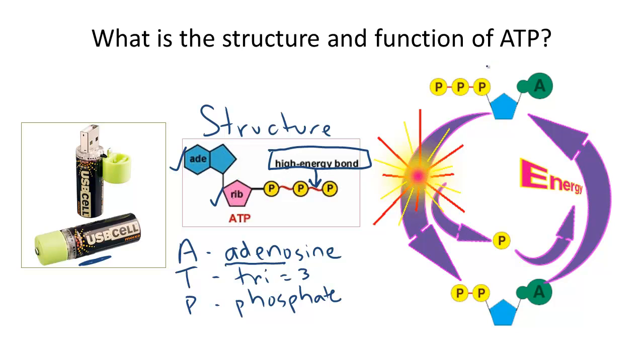ATP, noted here, because there is 3, turns into ADP. What does the D stand for? Di, meaning 2.